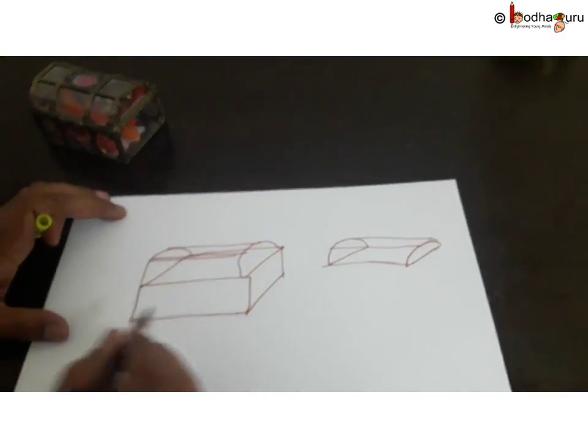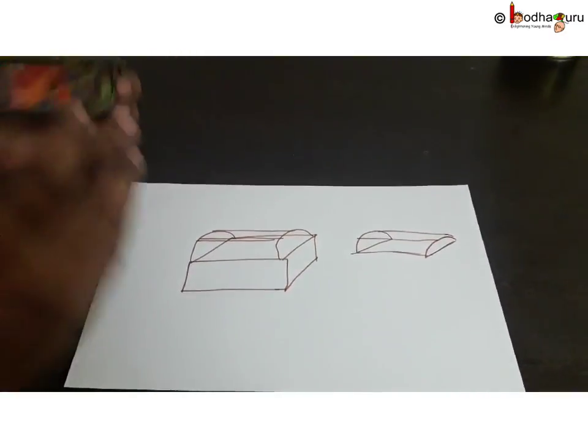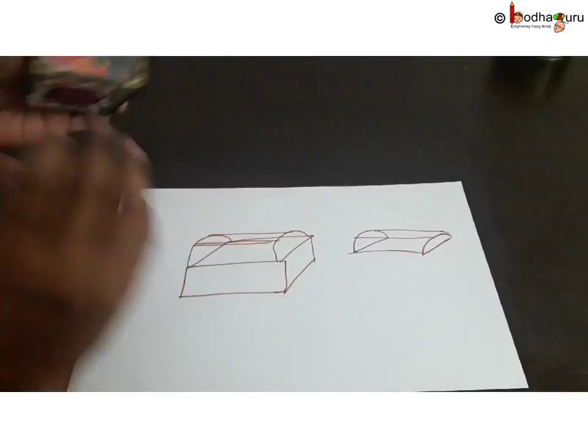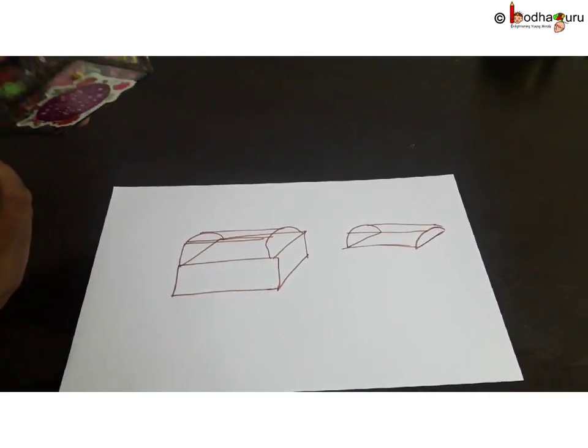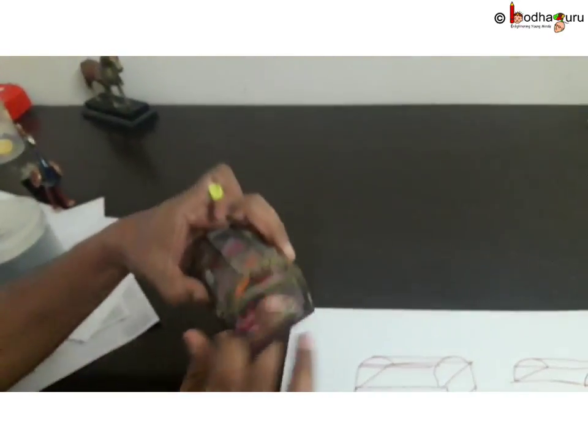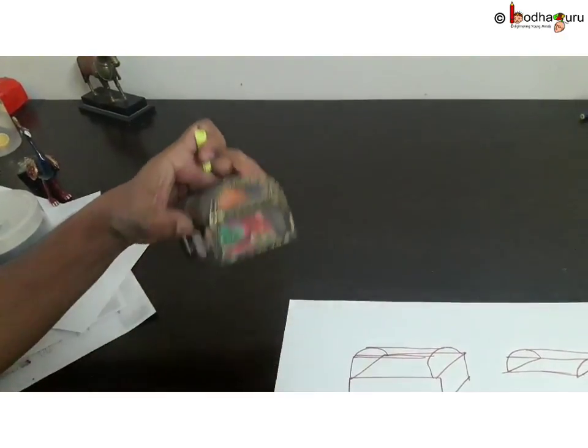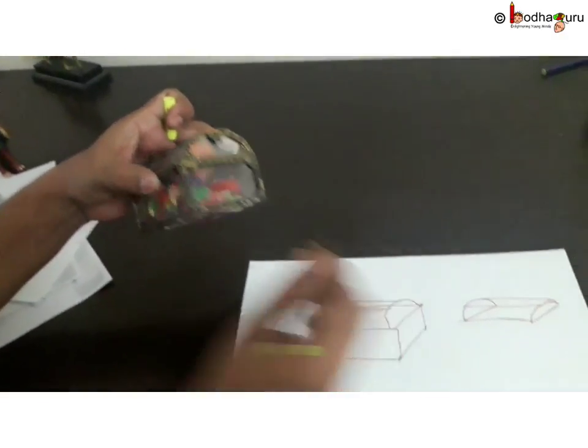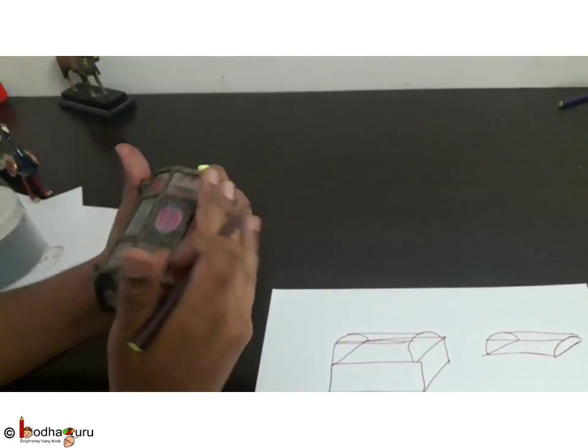So the surface area in this particular example would be the surface area of the cuboid, but only the faces which are visible, which is one, two, three, four, and five. The sixth face is not visible because it is inside the hollow part. So five faces which are visible, you add the area of that, plus